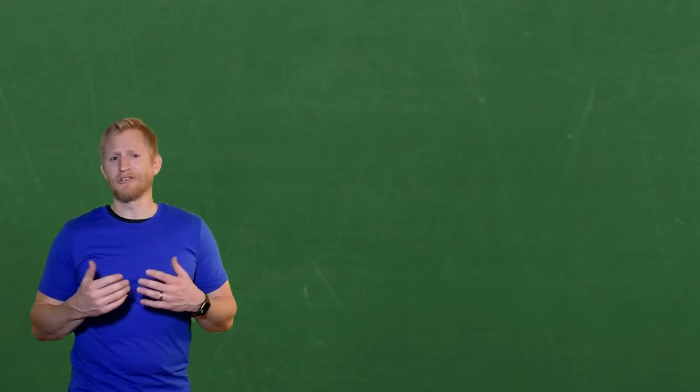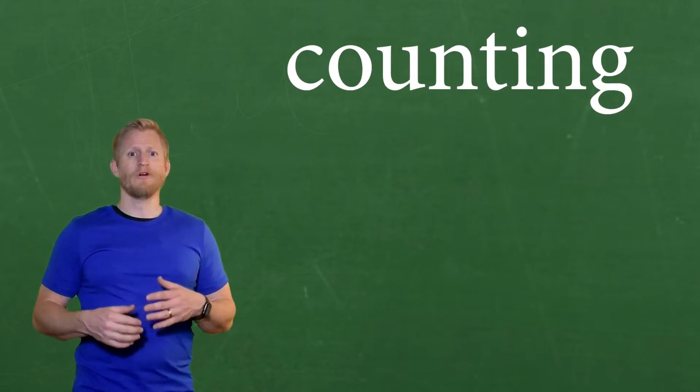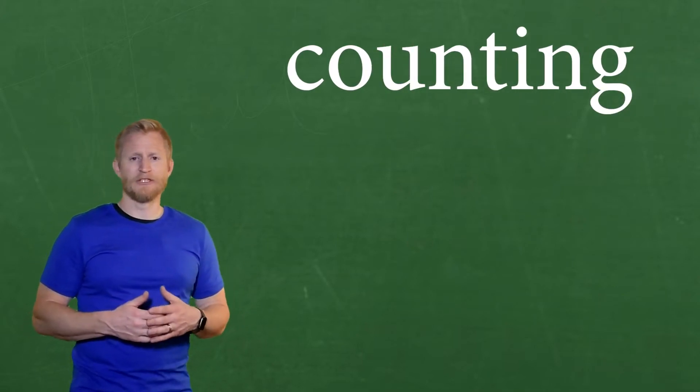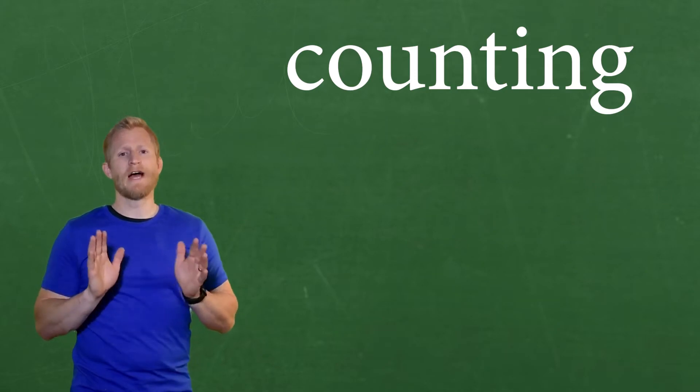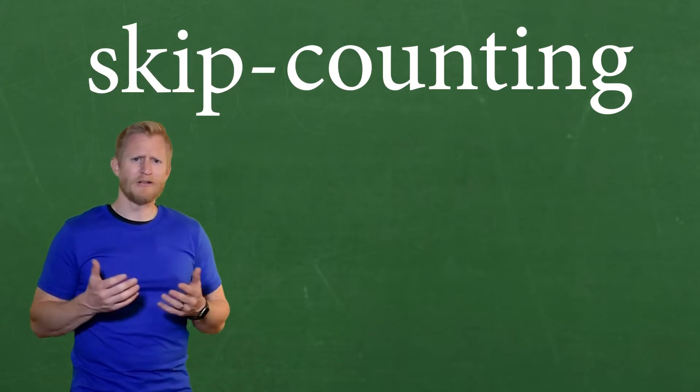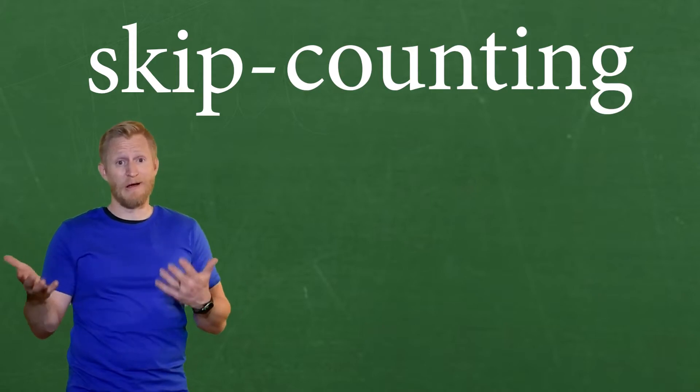Counting by ones is just called counting. When you count by any other number, such as by twos, we call that skip counting. It's called skip counting because we're skipping numbers.